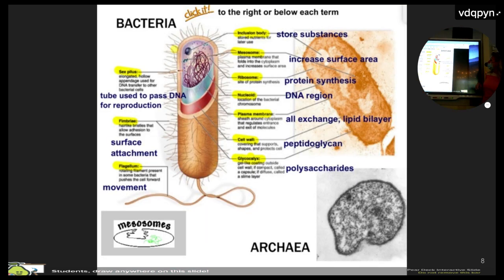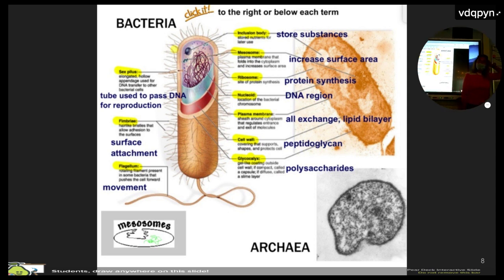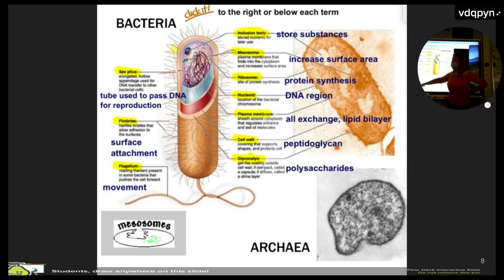Looking at specific structures inside: sex pili, fimbria, flagella for movement, inclusion bodies, mesosomes which increase surface area, ribosomes, nucleoid, plasma membrane, cell wall, and glycocalyx. Archaea is also prokaryotic. The three domains are Eukarya, Archaea, and Bacteria. Archaea is still prokaryotic but is more closely related in some structures to eukaryotes.